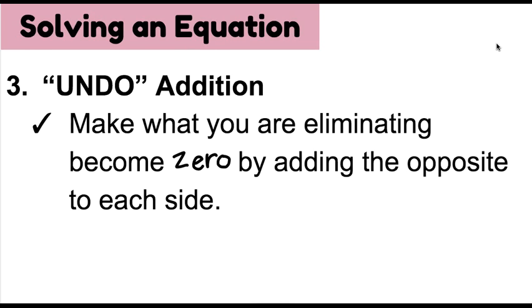So what's going to happen? The way I want you to think about undoing addition: you notice there's no subtraction here, and that's because in step one, we eliminate subtraction. So our goal with undoing addition is we want to take a look at what has to be eliminated, and we're going to make it become zero by adding the opposite to each side.